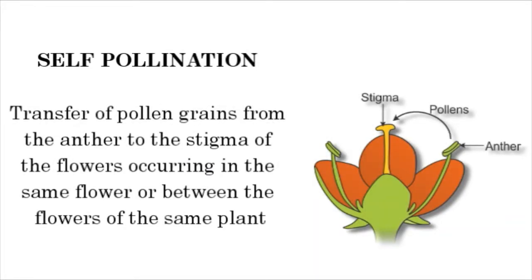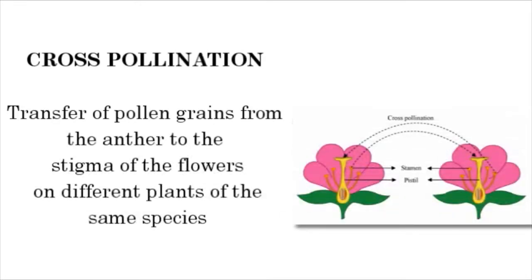Self-pollination is the transfer of pollen grains from the anther to the stigma of flowers occurring in the same flower or between flowers of the same plant. Cross-pollination is the transfer of pollen grains from the anther to the stigma of flowers on different plants of the same species.